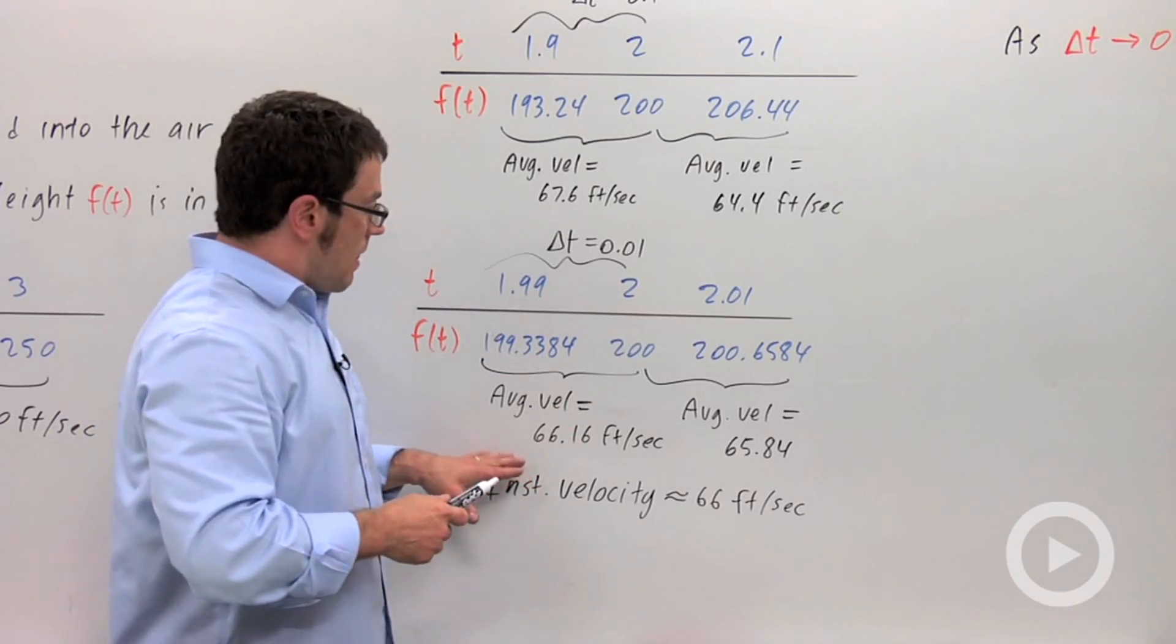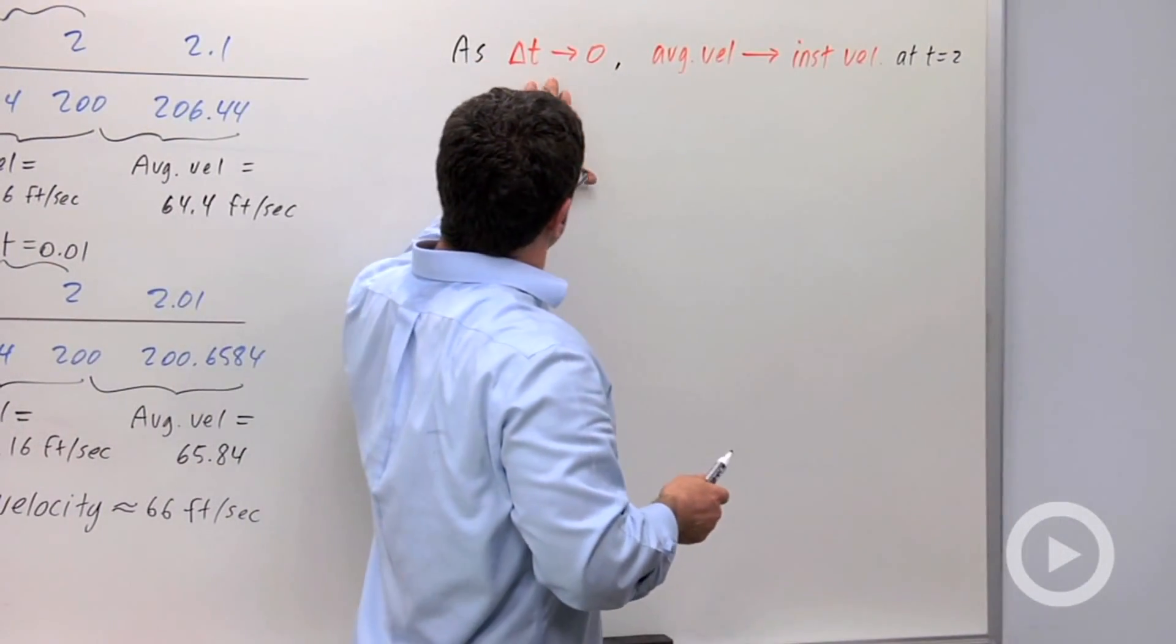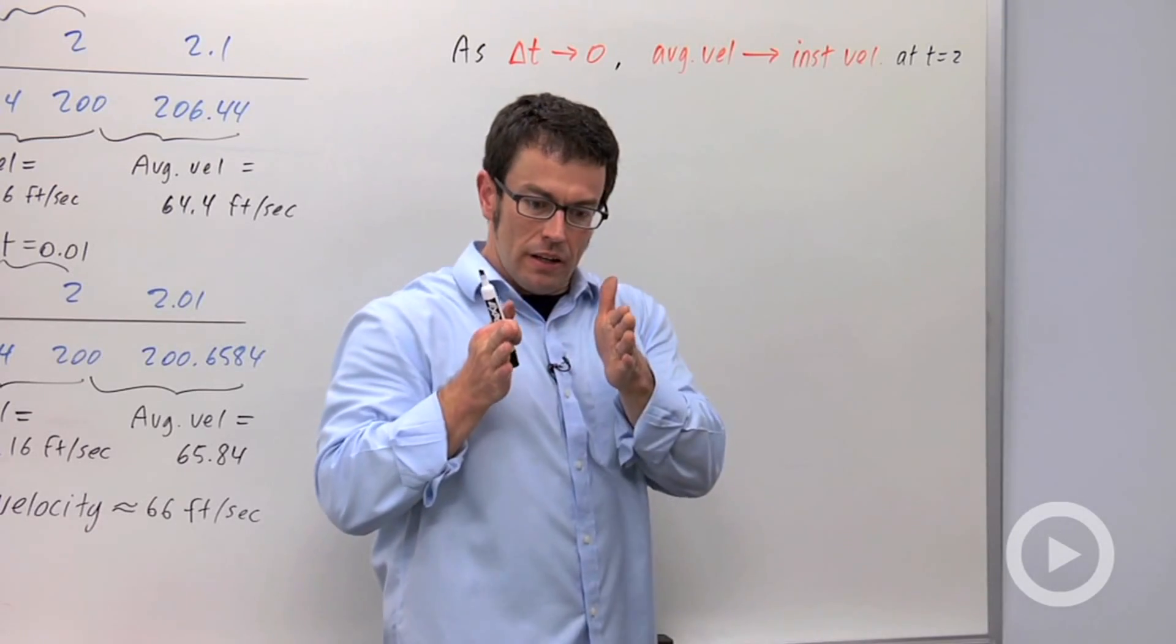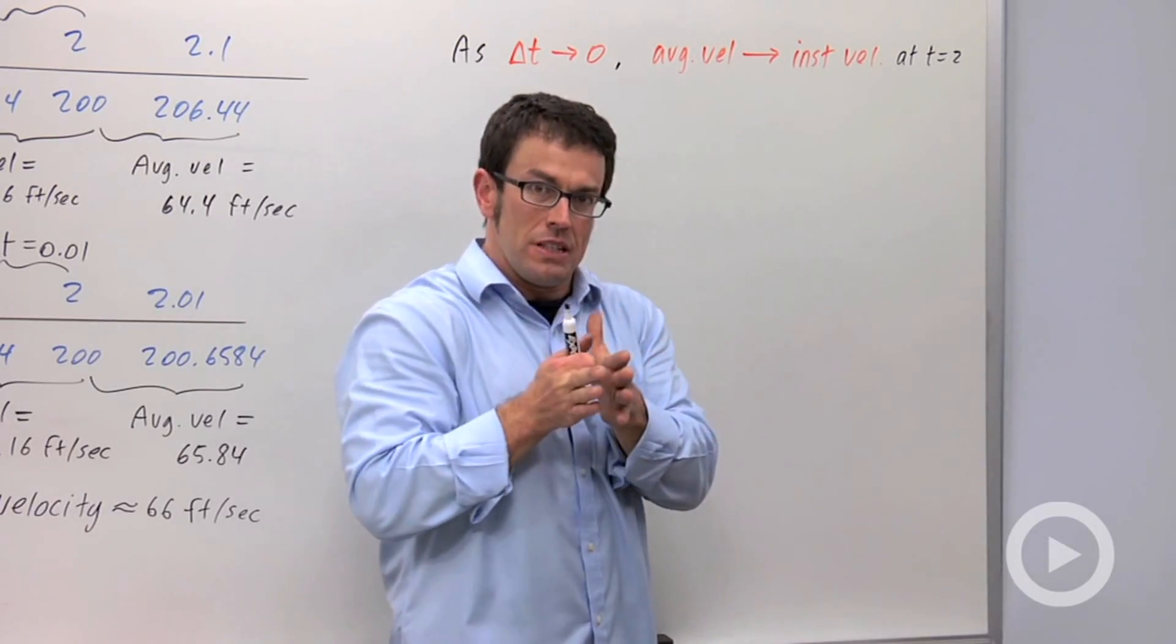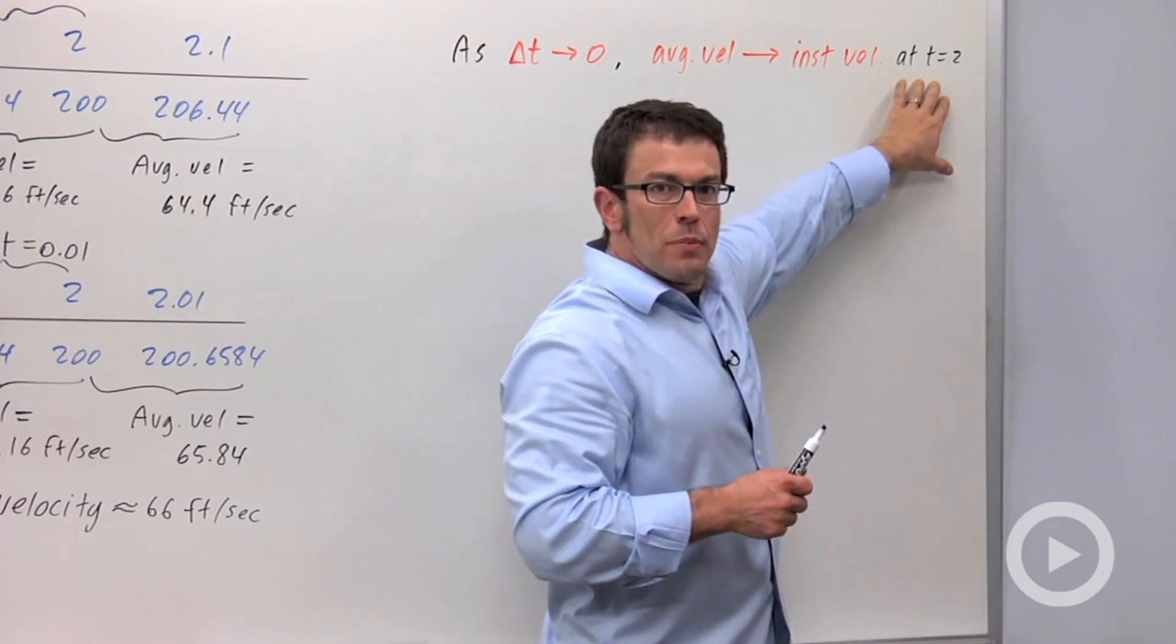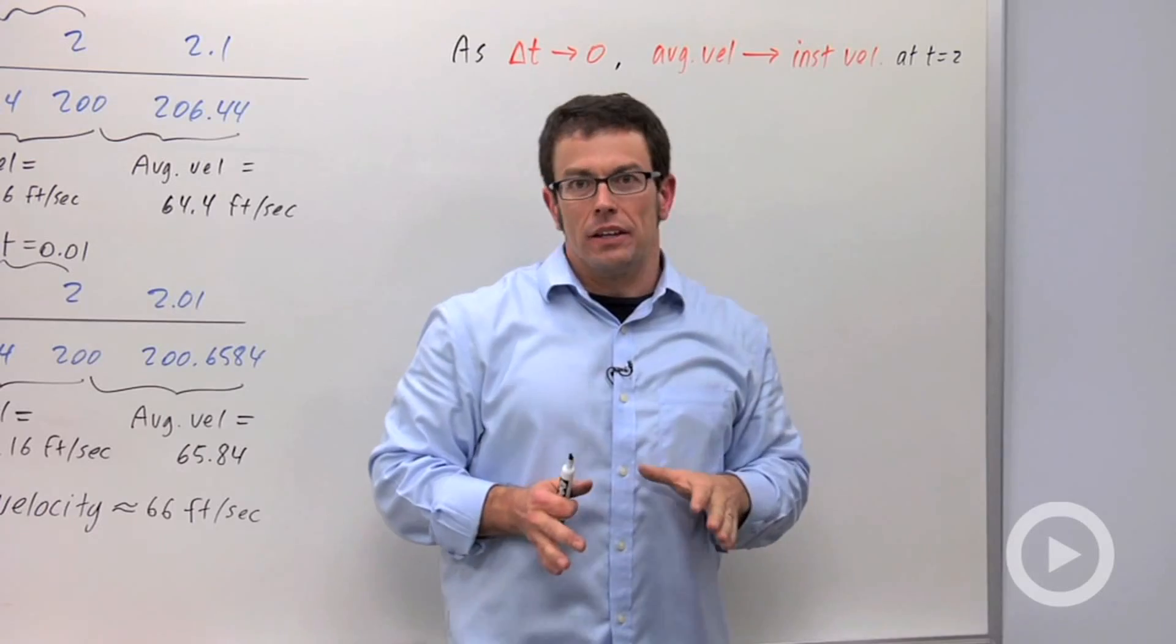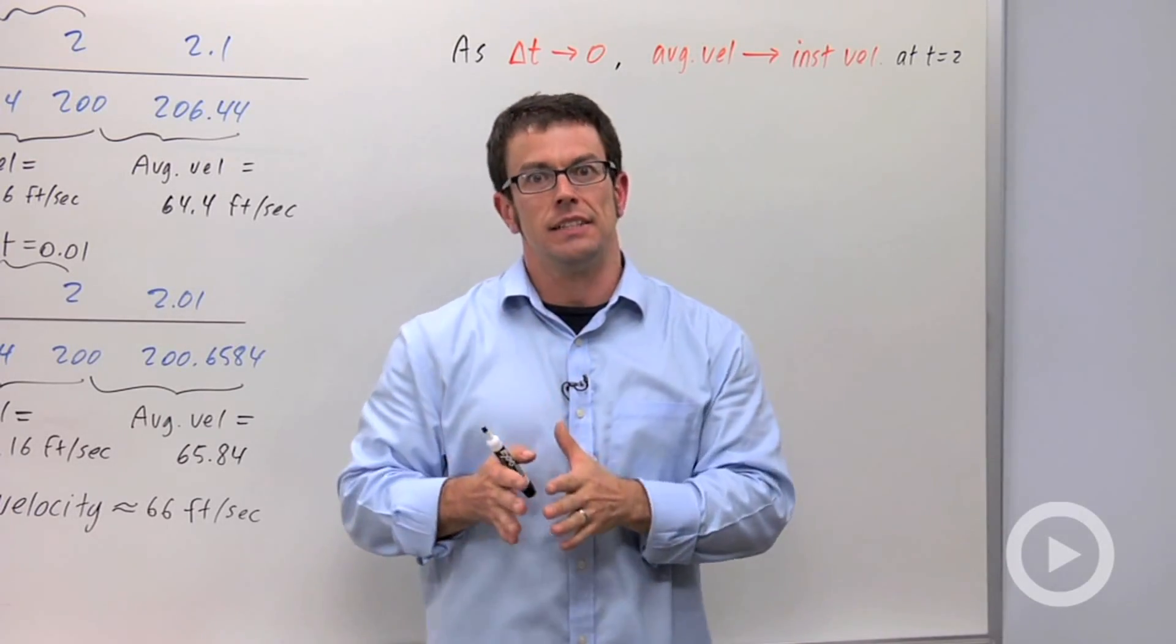And it turns out that this is exactly how we find instantaneous velocity. As delta t approaches 0, the length of the time increment that we're taking average velocity, as that increment goes to 0, average velocity approaches the value of instantaneous velocity at that particular time. And that's how we calculate instantaneous velocity. It's always a limit of average velocities as delta t goes to 0.